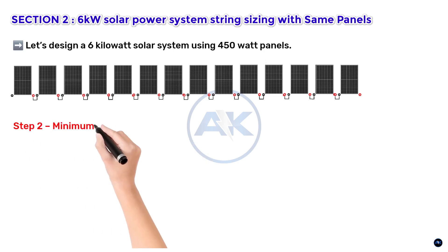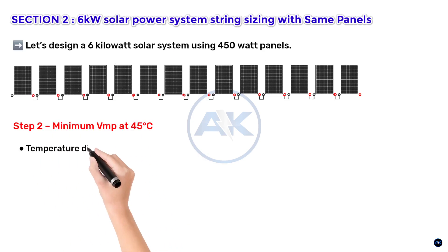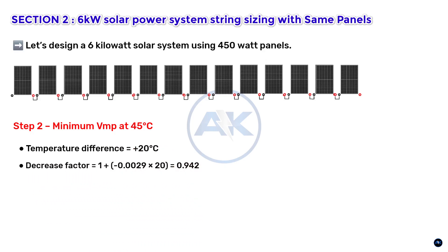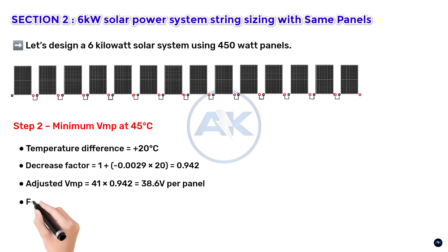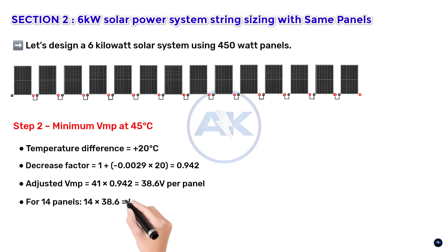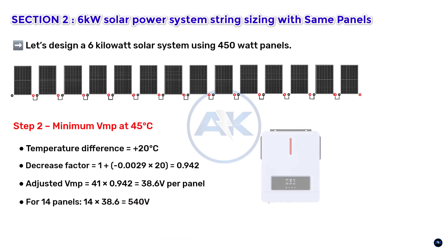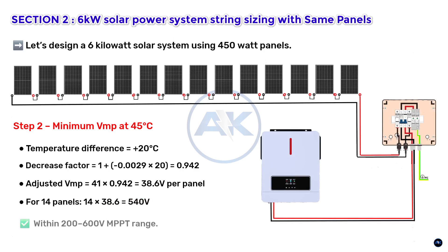Step 2 — VMP at 45°C. Temperature difference = +20°C. Decrease factor = 1 + (−0.0029 × 20) = 0.942. Adjusted VMP = 41 × 0.942 = 38.6 V per panel. For 14 panels: 14 × 38.6 = 540 V, which is within the 200–600 V MPPT range. Conclusion: a single string of 14 panels works perfectly.